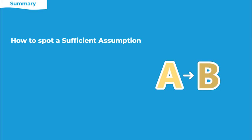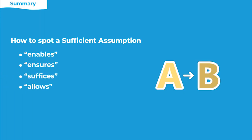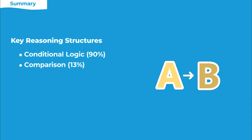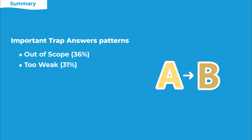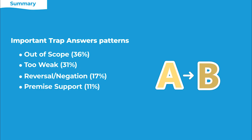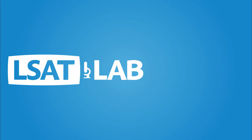In summary: you spot a sufficient assumption question with language cues in the question stem indicating sufficiency — words like 'enables,' 'ensures,' 'suffices,' 'allows,' 'would make,' or 'if.' The reasoning structures to watch for are conditional logic and comparison, with conditional logic being the dominant structure on this question type. The key trap answer patterns are: those out of scope, those too weak to prove the conclusion, those that reverse or negate terms in a relationship, and those that support the evidence instead of bridging the gap between evidence and conclusion. That's it for today's lesson on sufficient assumption questions. Check out these other videos or come visit us at lsatlab.com.